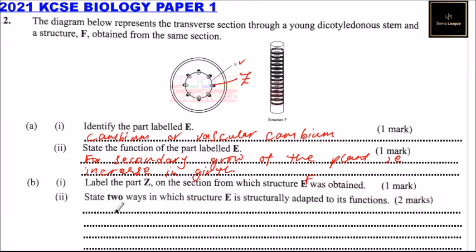Roman numeral two: state two ways in which structure F is structurally adapted to its function. So we say one of the ways is that it is firmly connected to one another.